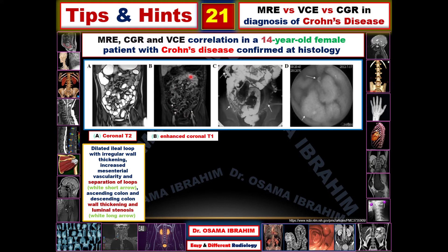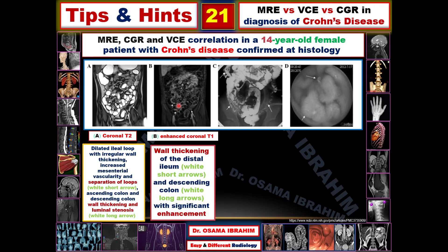The T1 sequence with intravenous contrast — the enhancing coronal T1-weighted image — shows enhancement of the wall of the terminal ileum with wall thickening greater than 4 mm, confirming abnormality. There are also areas of enhancement in the descending colon appearing as high signal in the bowel wall. Skip lesions are another diagnostic feature of Crohn's disease visible on this enhancing study. This child was confirmed histopathologically as Crohn's disease.